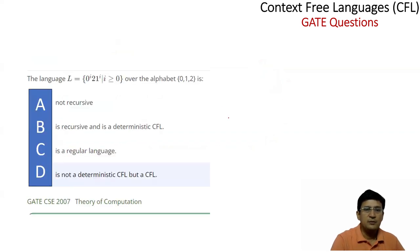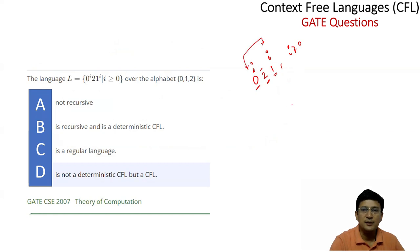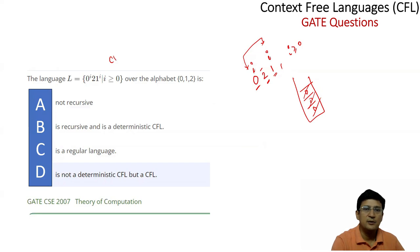Let's take another question. This question says the language is 0^i followed by 1 raised to the power i, with 0^i and then 2 and then 1^i, where i is greater than or equal to 0. The question states this language is not recursive — but what does that mean?